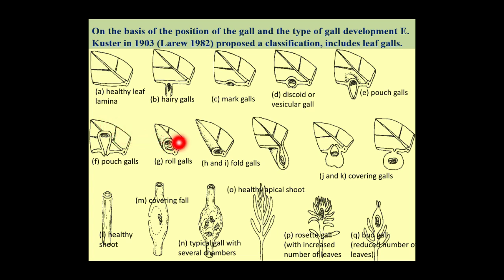The fifth type of gall is roll gall and fold gall. This is the roll gall and this is the fold gall. This differential growth is caused by the feeding habits of the insects, and it results in winding or twisting or folding of the leaves. Sometimes the leaves also get swollen.